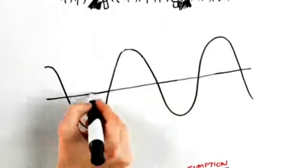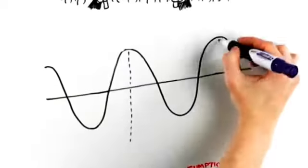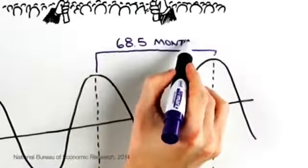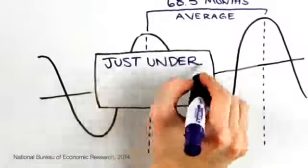How long does the process take? In the eleven cycles since World War II, the average period of time from peak to peak has been 68.5 months, or just under six years.